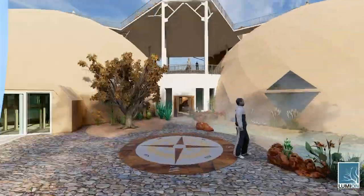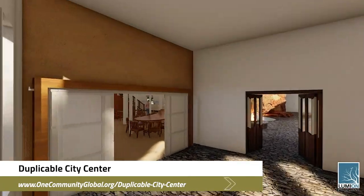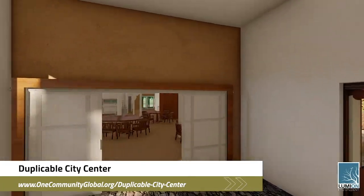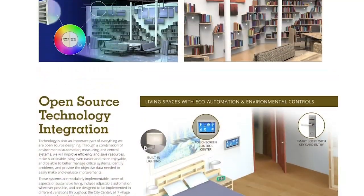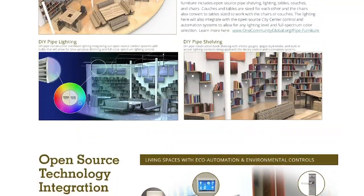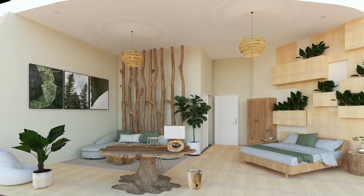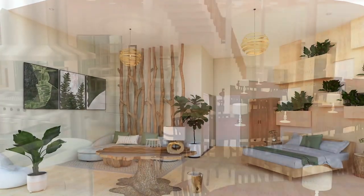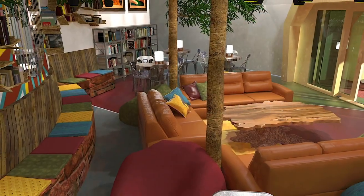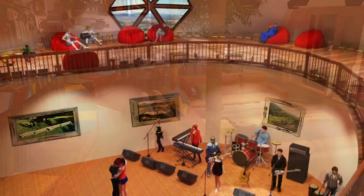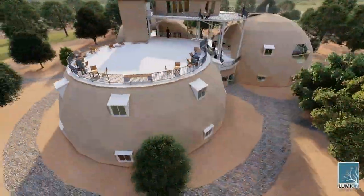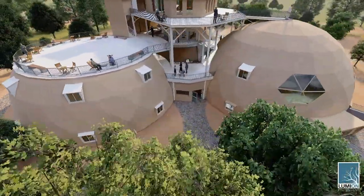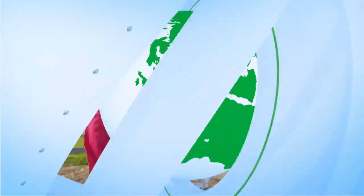One Community is also creating an open source duplicable city center. It is designed to be LEED Platinum certified, provide 12 guest rooms, dining for over 150 people, and laundry and recreation space for over 300 people, all while saving money, time, space, and resources.